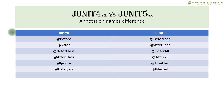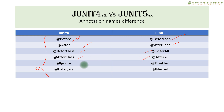Coming to the annotation name differences: in JUnit 4 it was @Before, now changed to @BeforeEach; @After changed to @AfterEach; @BeforeClass changed to @BeforeAll; @AfterClass changed to @AfterAll; @Ignore is now @Disabled; and @Category is now @Nested. I'll explain all of these in detail in subsequent videos — the changes make the annotations clearer and more explanatory.